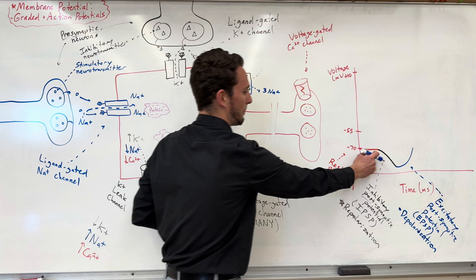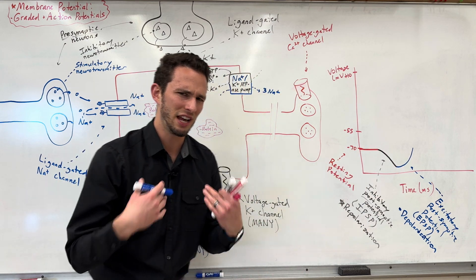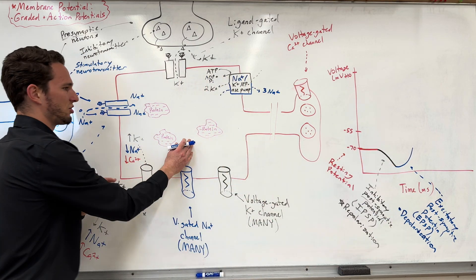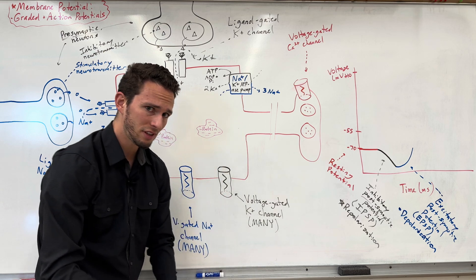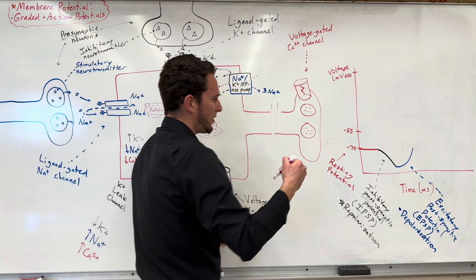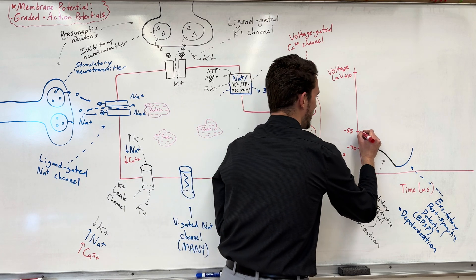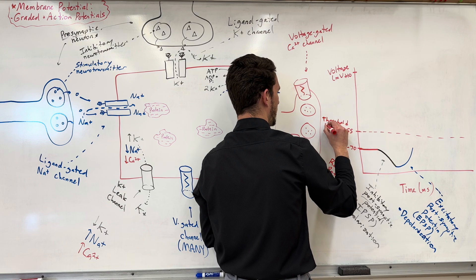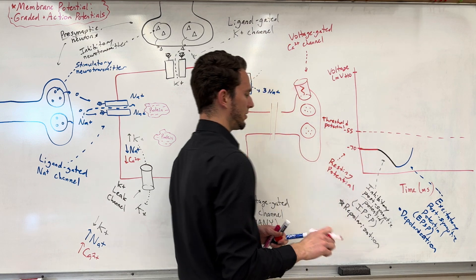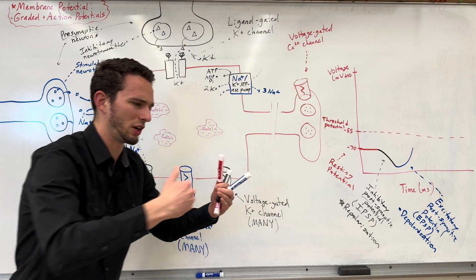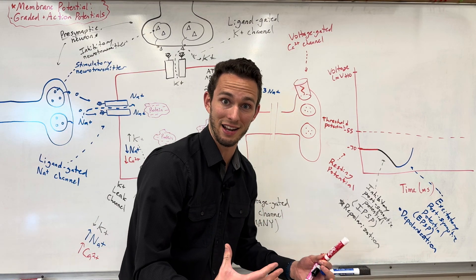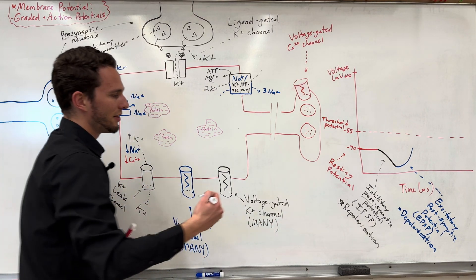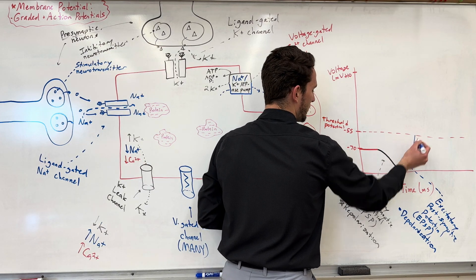These two examples are called graded potentials. The neuron is still staying pretty negatively charged — not doing a whole lot, still negative and doing nothing. But here's the kicker: we have another voltage inside this neuron called negative 55 millivolts, and we call this the threshold potential. The word 'threshold' implies that once you cross it, something crazy is going to happen. So let's say, hypothetically, we have enough sodium fly in to get this neuron to negative 55 millivolts.